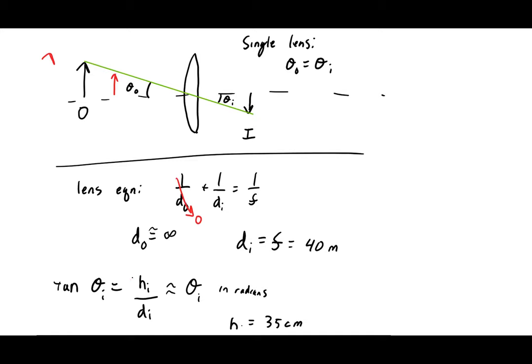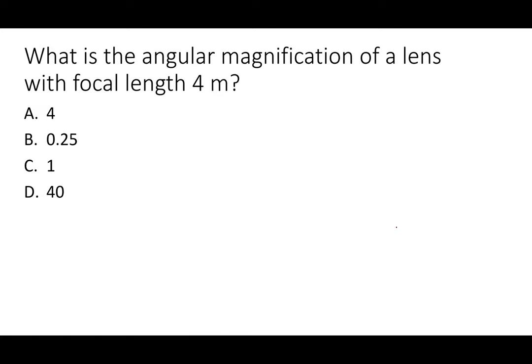With image distance equal to focal length, the height of the sun's image is 35 centimeters for the given focal length. A single lens — regardless of focal length — always has an angular magnification of exactly one, so it never achieves angular magnification. The angular size of the image always equals the angular size of the object.